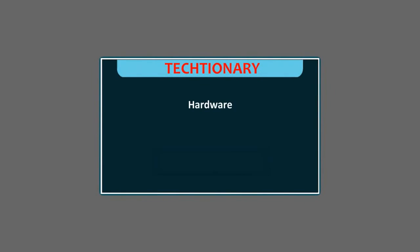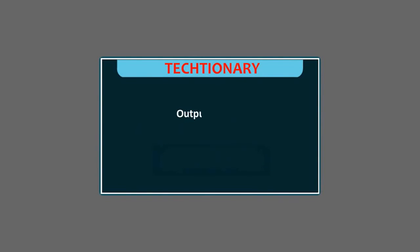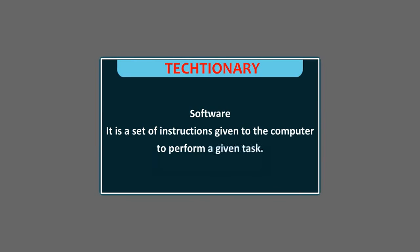Dictionary: Hardware: It is the physical part of the computer that we can touch and see. Input devices: These devices allow us to enter data and instructions to a computer to carry out various tasks. Output devices: These devices display the result after processing the data. Storage devices: These devices are used in the computer to store the data. Processing devices: These devices help the computer to process the data. Software: It is a set of instructions given to the computer to perform a given task.